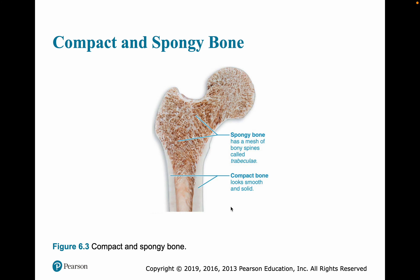Here you can see this bone — this is the end of a long bone. Outside is surrounded by compact bone, and then inside is spongy bone. Down here we have a marrow cavity. Most bones are going to have some spongy and some compact bone in them.